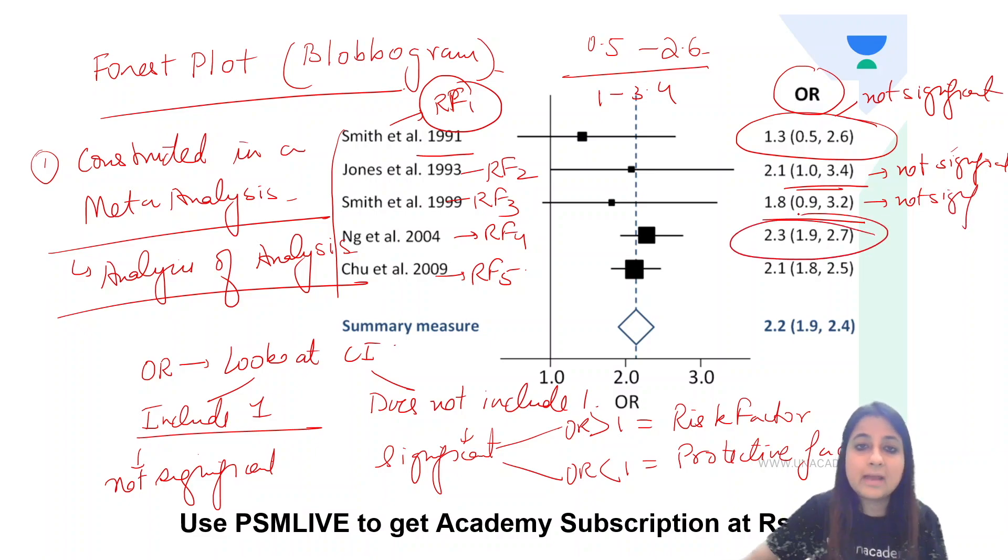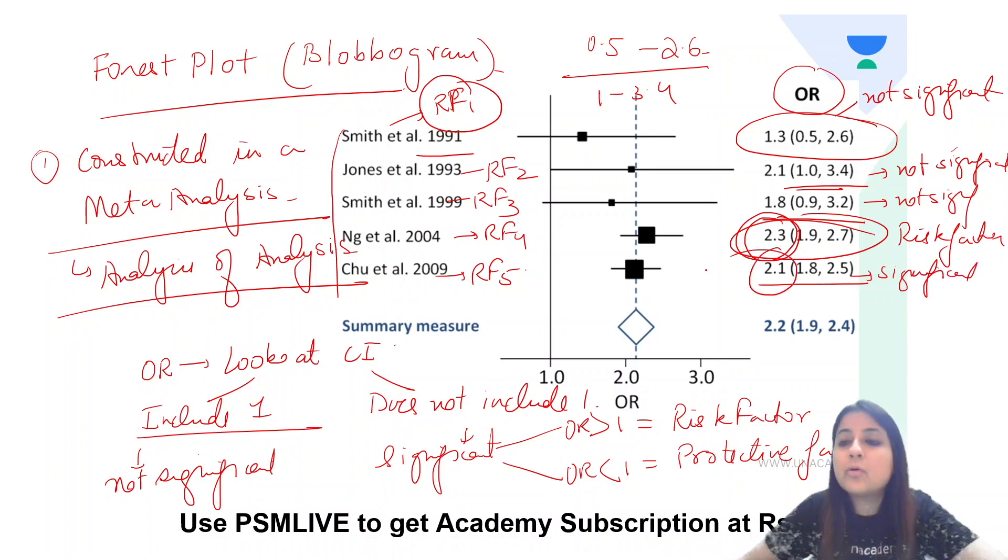But if you look at the fourth one, 2.3, confidence interval 1.9 to 2.7. One is not included. One comes before 1.9, so one is not included. This is statistically significant. Now, once this is statistically significant, odds ratio is more than 1, so this becomes a risk factor. If you look at the last one, 2.2, confidence interval 1.8 to 2.5, one is not included. This is significant, and this value is more than 1, so this is again a risk factor.